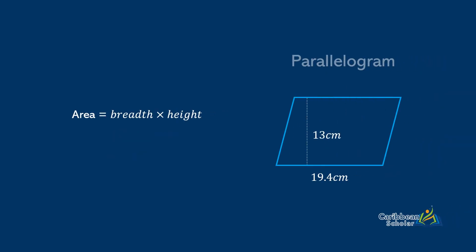The area of a parallelogram is given as breadth by height. Breadth is just another word for width, and the height required is the line perpendicular to the top and bottom lines. In this example, breadth by height is 19.4 by 13, and this gives 252.2cm².